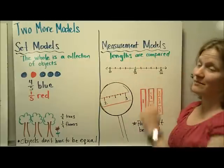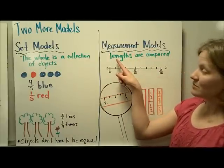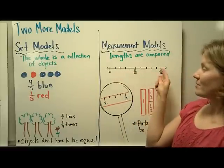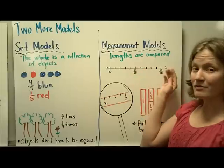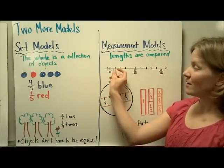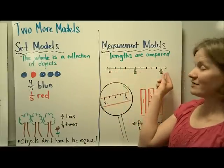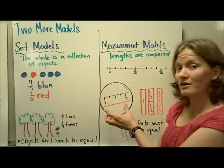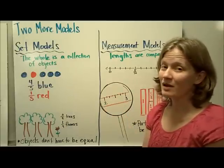The third model that you need to know is the measurement model. In this model, lengths are compared. You can see here a number line that's marked off in tenths, and you can compare one tenth here to five tenths or ten tenths. This is like you've zoomed into a ruler, and a ruler is a really good example of fractions.